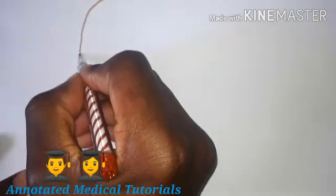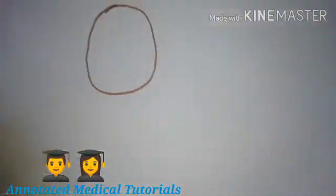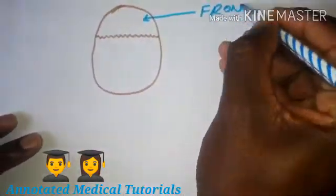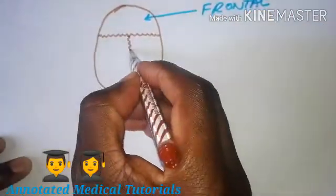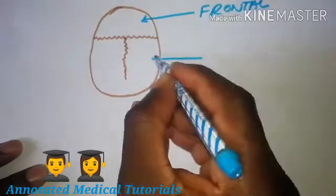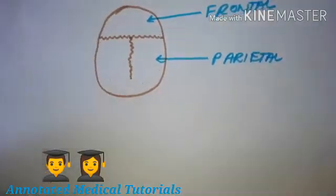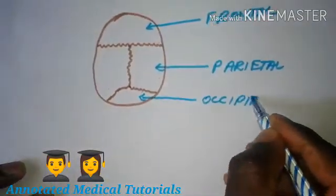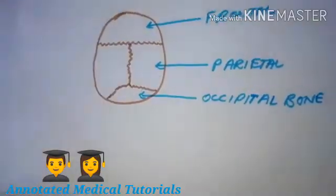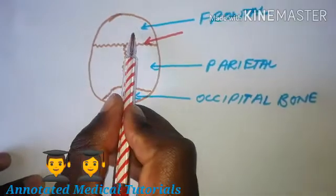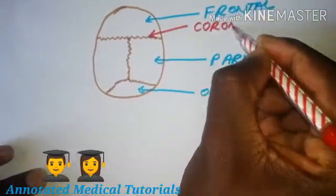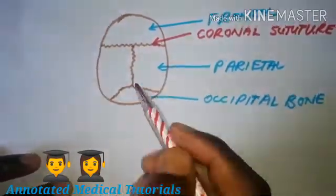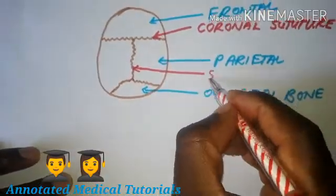Let's draw an adult skull as we look at it from the top. We have a suture crossing here — this is the frontal bone — and then another suture separating the two parietal bones from each other, and another suture separating the two parietal bones from the occipital bone posteriorly. The suture separating the frontal bone from the two parietal bones is called the coronal suture. The coronal suture and the coronavirus have something in common: they both resemble a crown.